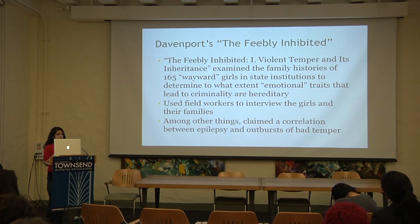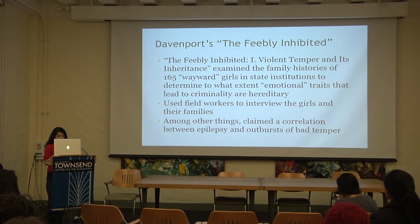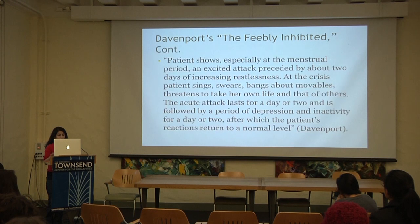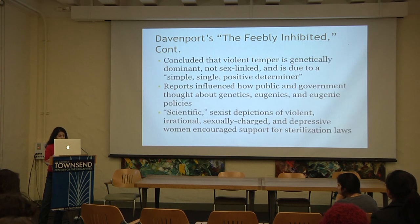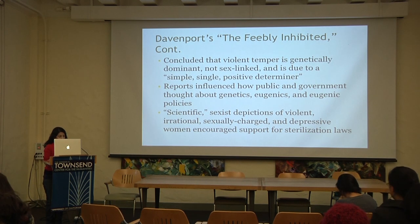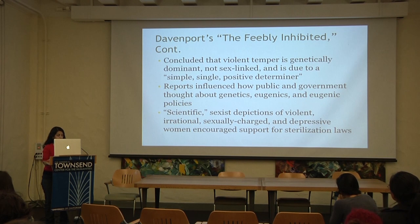They made ample use of field workers to interview the girls and their families. Davenport wrote that there was a correlation between epilepsy and outbursts of bad temper. He described a composite typology of the girls' perceived violent and insane behavior. He was sure to point out that fits of temper were 'often associated with the menstrual period' and that 'monkeys show this type of temper.' Davenport concluded that violent temper must be dominant, must not be sex-linked, and must be due to 'a simple single positive determiner.'